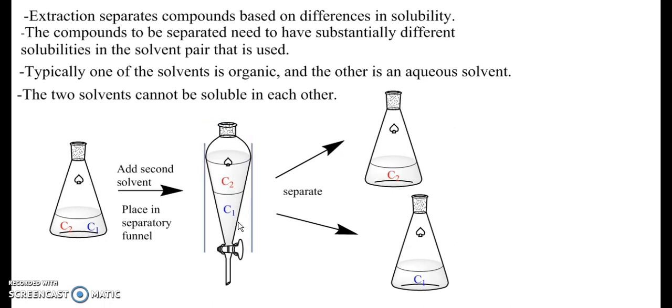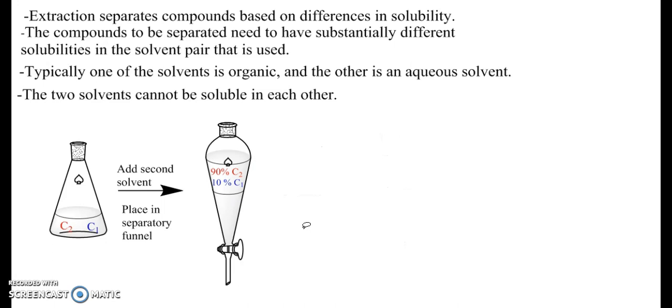For instance, if we focus just on our organic layer, and let's assume that in this case after our first round of extraction we end up with ninety percent of C2 in the top layer and ten percent of C1 in the top layer. Or in other words, the top layer is a mixture of ninety percent C2 and ten percent C1. Presumably the aqueous layer would be the reverse of this and would be mostly C1 and only a small amount of C2.